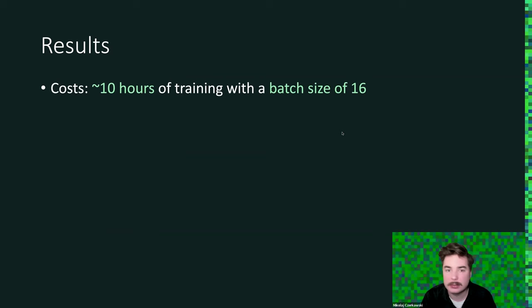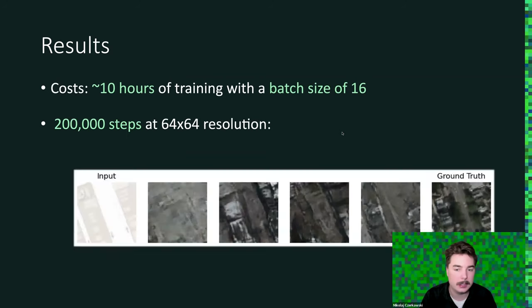Again, it takes about 10 hours to train a 64 by 64 model. And this is our input. This is our ground truth. And it can predict these types of samples.